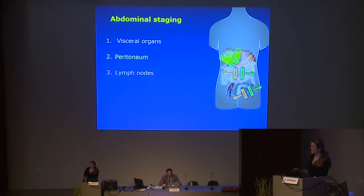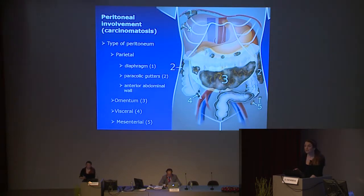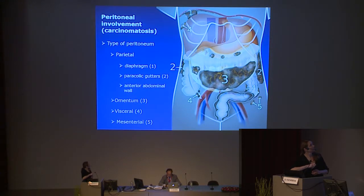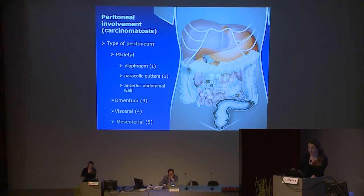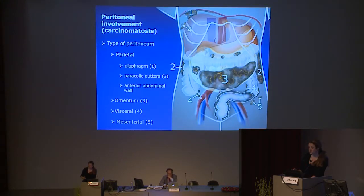Moving to the peritoneum — this is the most critical point for cytoreduction, because infiltration of visceral organs is usually very rare in the primary diagnosis and is more typical in recurrent tumor. The peritoneal infiltration in the abdomen is divided into parietal carcinomatosis (on the diaphragm, anterior abdominal wall, and paracolic gutter), visceral carcinomatosis (on the surface of viscera and colon), mesenterial carcinomatosis (on the meso appendix, mesotransversum, sigmoid mesocolon, and mesentery of small intestine), and also omental infiltration — since the omentum is the largest fold of peritoneum.